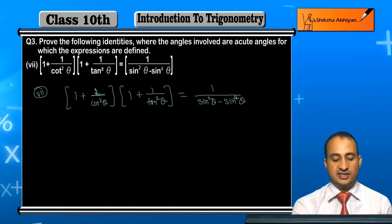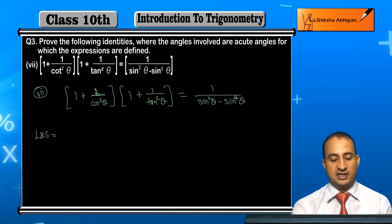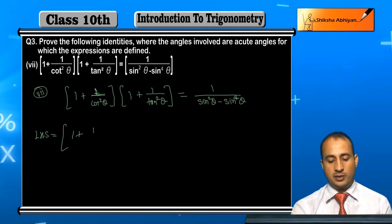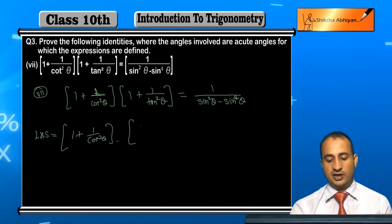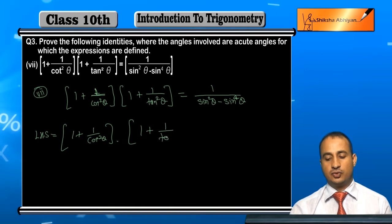See how we will do this. First, I will take the left side. The left hand side is (1 + 1/cot²θ) multiplied by (1 + 1/tan²θ).